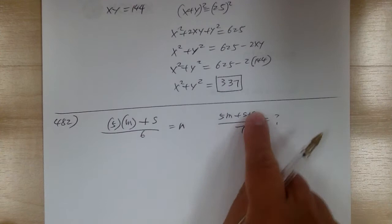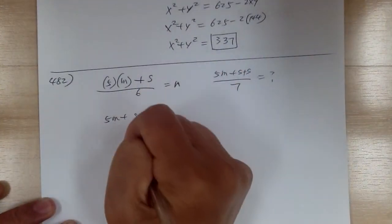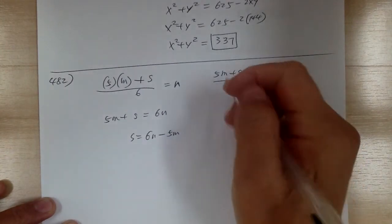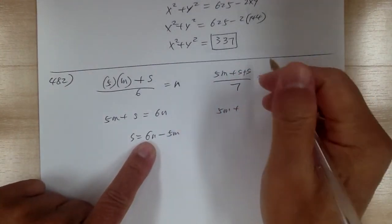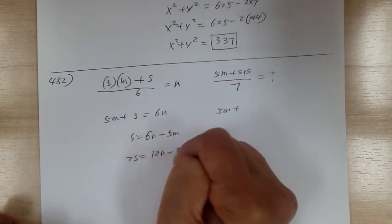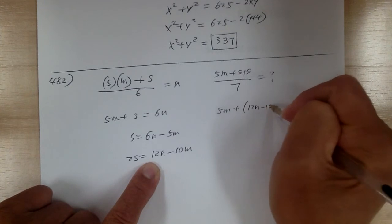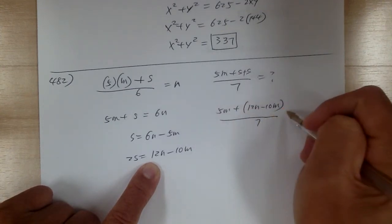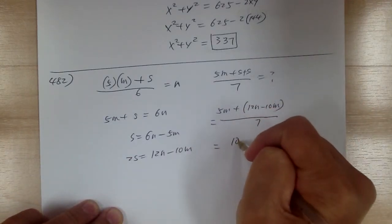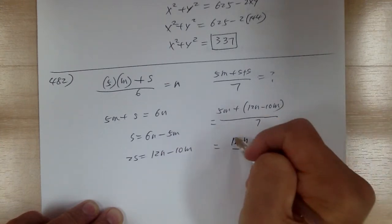First let's solve for s so we can substitute. Cross-multiply: 5m plus s equal to 6m. So s equals 6m minus 5m, which is m. Then substitute: 2s equals 2m. So you get 5m plus 2m over 7, which simplifies. So the average would be 12m minus 5m over 7, and that would be the average.